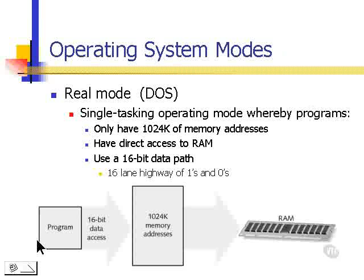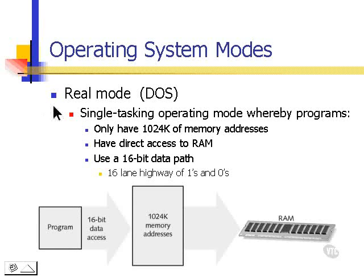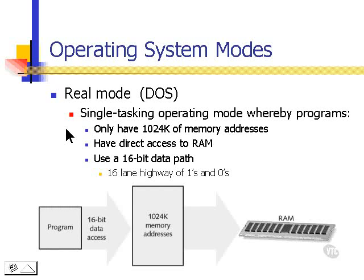Operating system modes include real mode, which is used by DOS. In real mode, we're talking about a single-task operating mode. If we're doing one thing, that's all we can do — we'd have to close that to do something else. It only addressed 1024K of memory addresses, that's 1 meg of RAM.